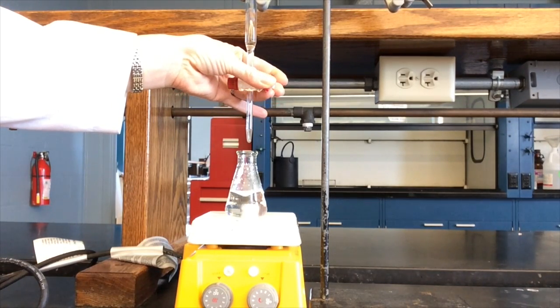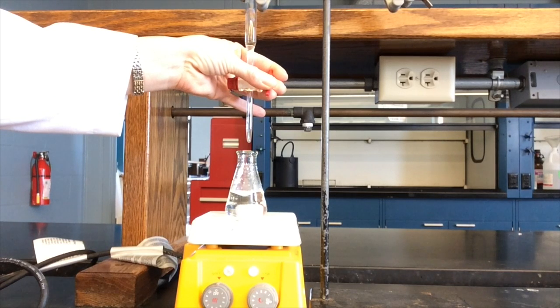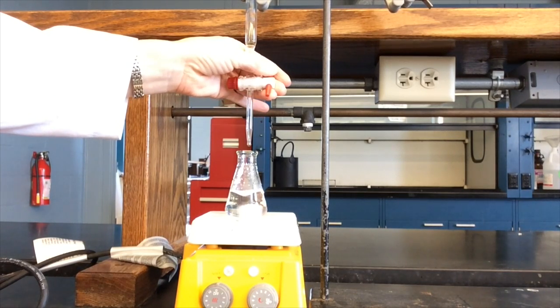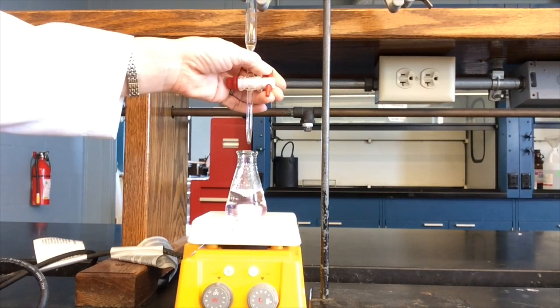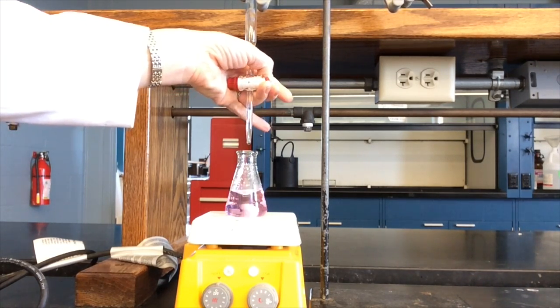When you start to see faint pink lines appearing in the flask, you know that you're approaching the end point of the titration. At this point, add the titrant very slowly in a dropwise fashion until the solution achieves a faint pink color.